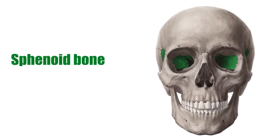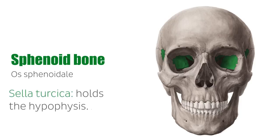The sphenoid bone is in a unique position because it is surrounded anteriorly by the frontal bone, superiorly by the parietal bone, and posteriorly as well as laterally by the temporal bone. The sphenoid borders the anterior and middle cranial fossae, with its most prominent feature being the sella turcica, which holds the hypophysis.